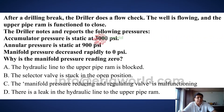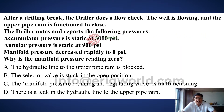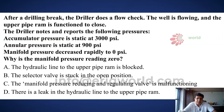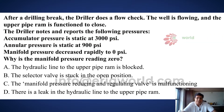In this question, an upper ram is closed and the driller notes down the following readings: accumulator pressure is static at 3000 psi, annular is static at 900 psi, whereas the manifold pressure is rapidly decreasing and it is at 0 psi. The first question is: why is manifold pressure reducing to 0?